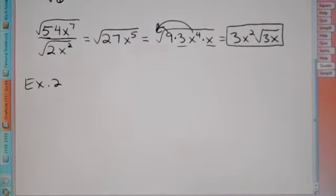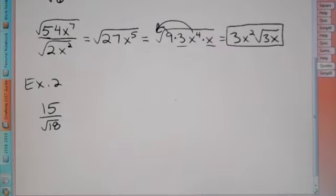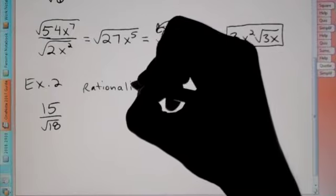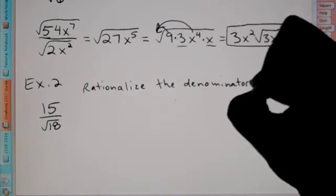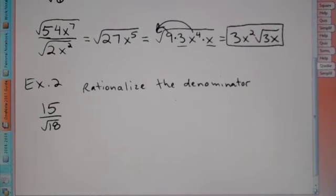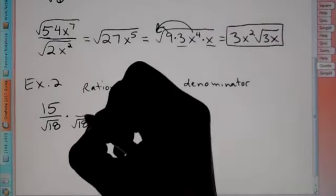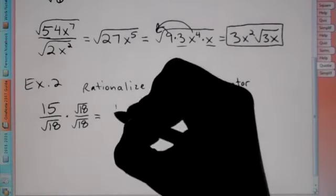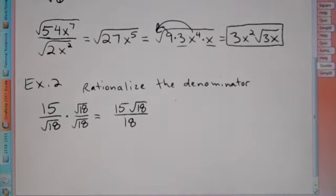Let's do another example. If the numerator doesn't have a root but the bottom does, we need to rationalize the denominator. There are two ways of doing this. The first way: you get rid of a root by multiplying it by itself, but you have to multiply the numerator as well. So that gives us 15 times root 18 on top. Root 18 times root 18 is 18, so the root goes away on the bottom.